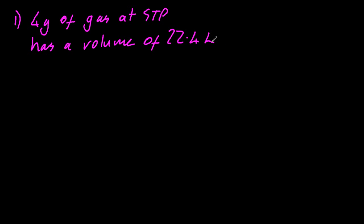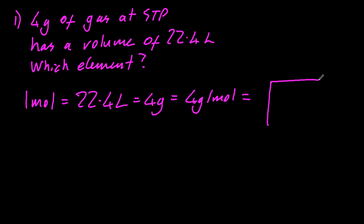So if I have 4 grams of a gas at STP and it's got a volume of 22.4 litres, which element is that? Well, 1 mole, 22.4 litres at STP is 4 grams. So I can work out it's 4 grams per mole, which is helium.